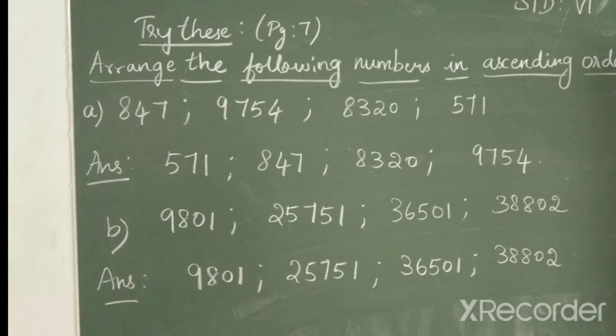Now, moving on to the next sum: 9801, 25751, 36501, and 38802. So, here 4-digit numbers and 5-digit numbers are given. So, the number having least number of digits is 9801.